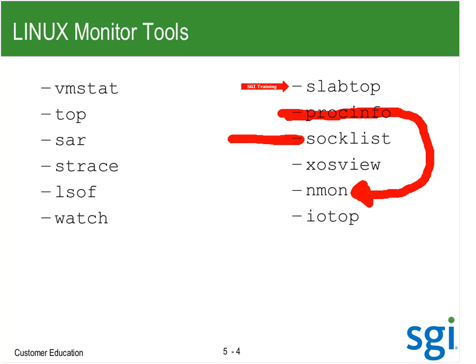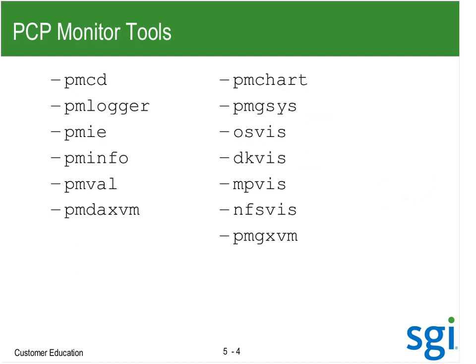XOS View — I don't use VUX anymore, I use PMG Sys instead. And nmon I'll show you, then there's iotop that I've been using. For PCP, PMCD has to be up and running — that's my data collector.